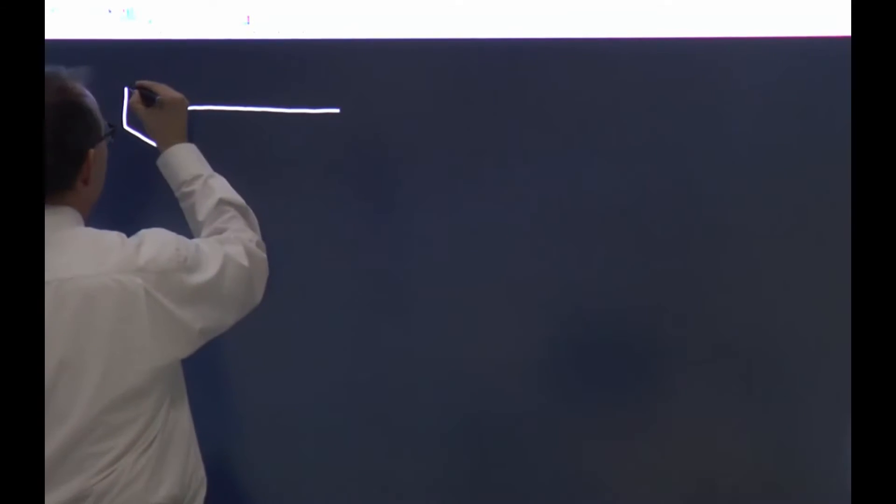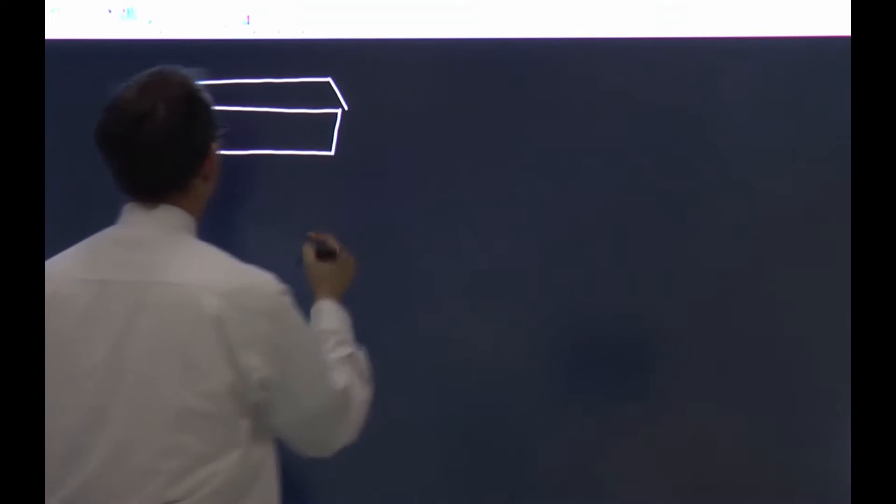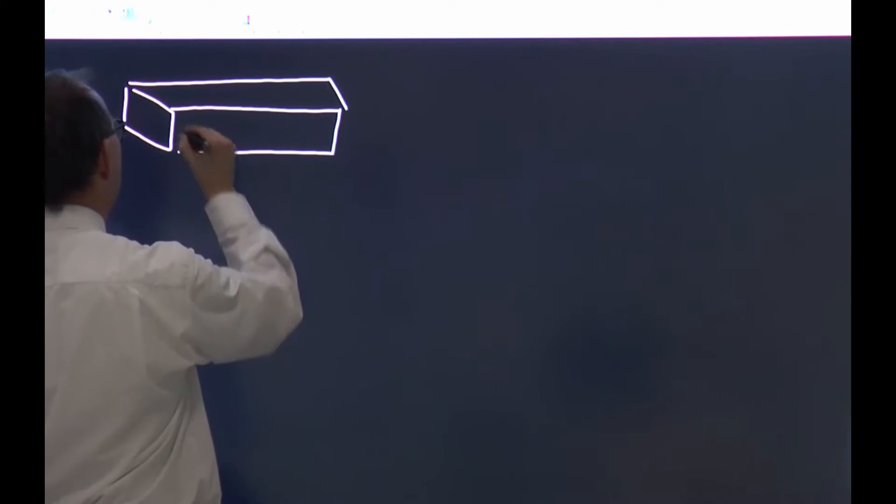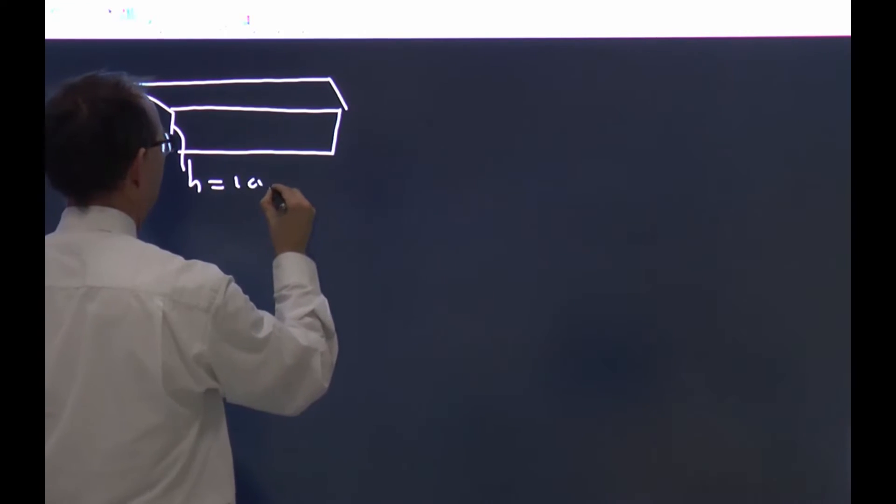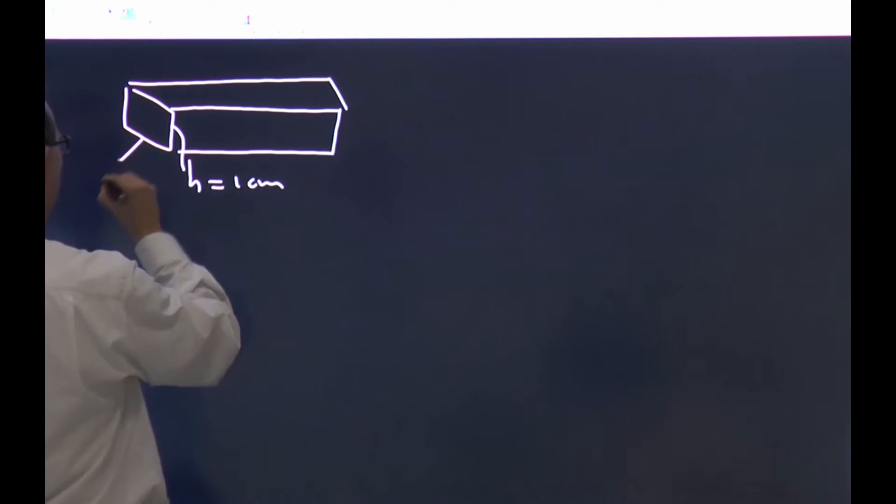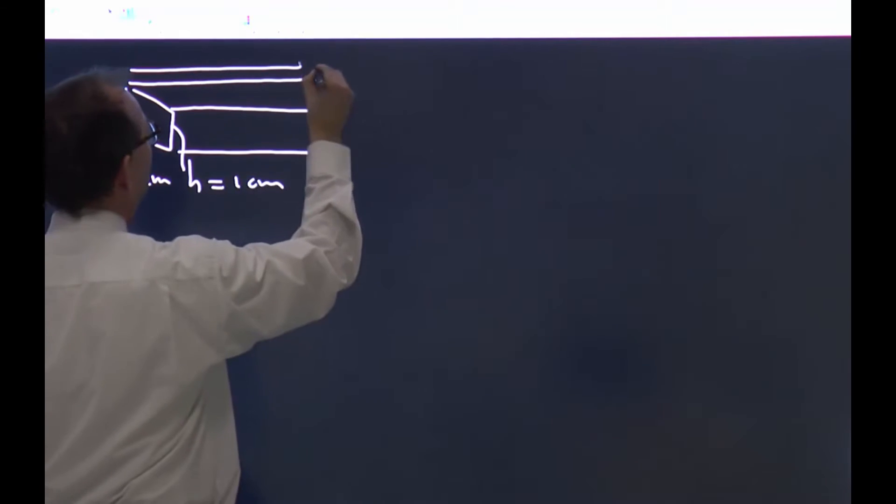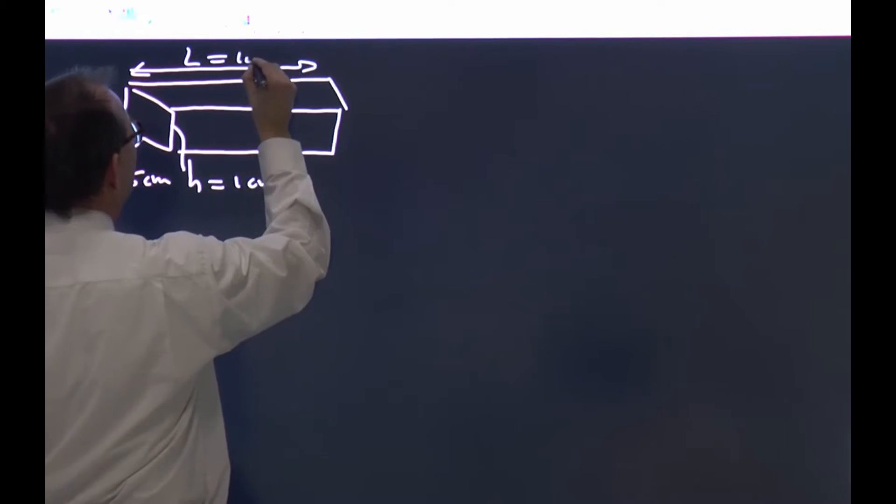Rather than a cylindrical pipe, we have a rectangular pipe. It has a height h of 1 centimeter, it has a width w of 5 centimeter, and it has a total length l of 10 meter.